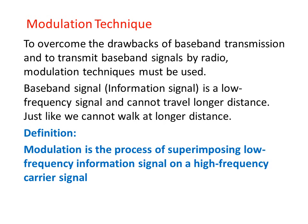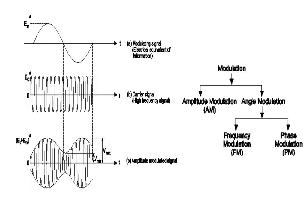There are three types of modulation techniques: number one is amplitude modulation, and another one is angle modulation. We have already discussed amplitude modulation in our previous video, and now we will discuss angle modulation. We have two types of angle modulation: frequency modulation and phase modulation.